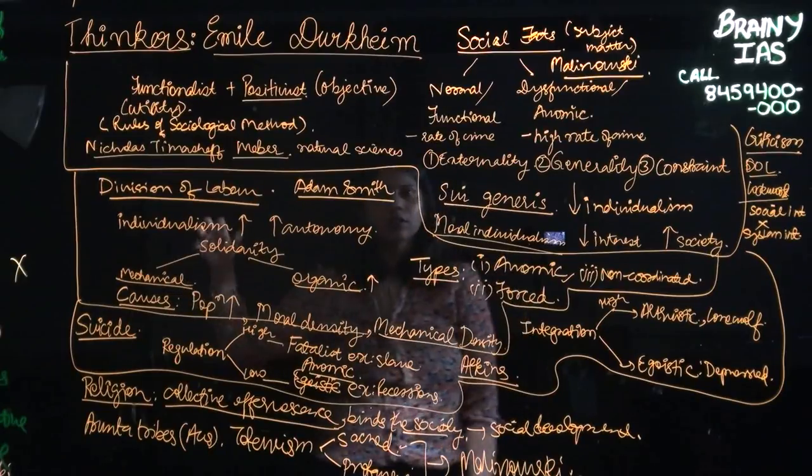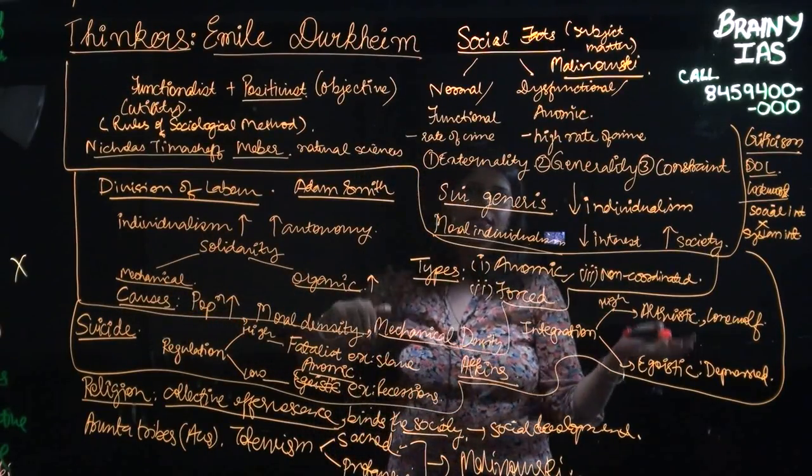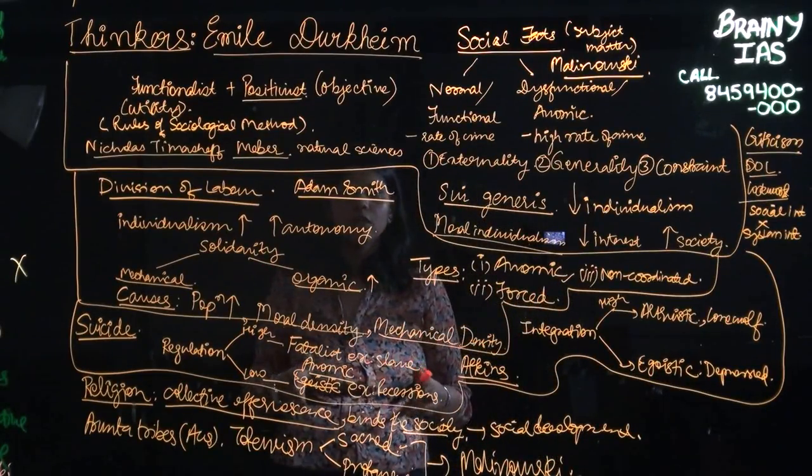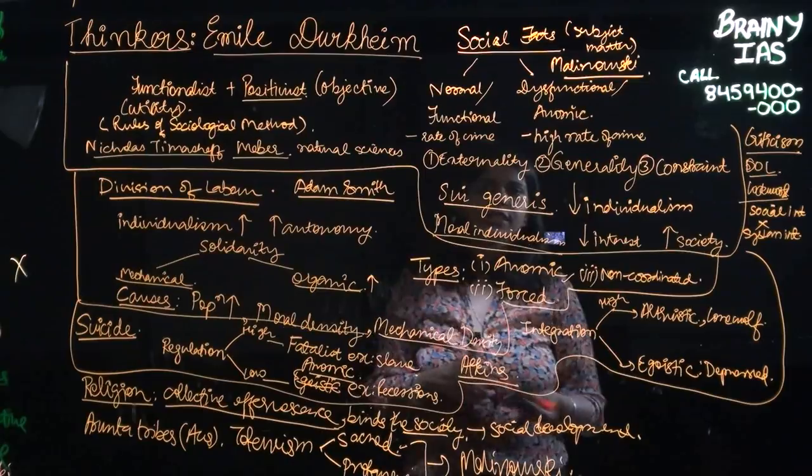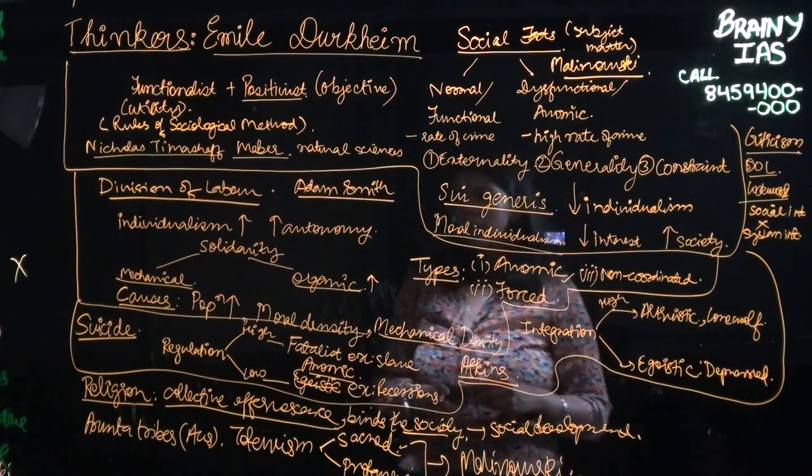So division of labor he also sees as a social fact. He then also sees suicide as a social fact wherein he explains four types of suicide depending on the level of regulation and integration in the society. And lastly, he talks about religion.